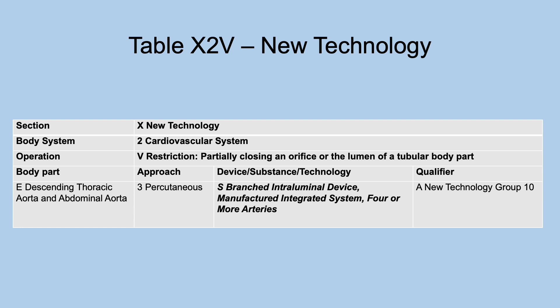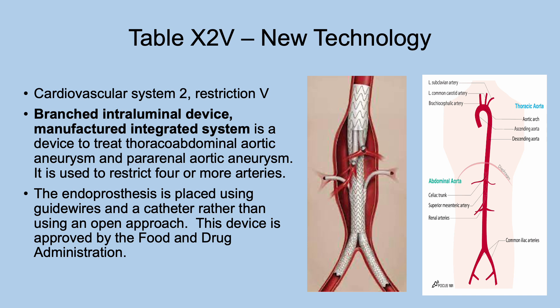Now let's look at new technology restriction in the cardiovascular system — for the descending thoracic aorta and the abdominal aorta. The new device is a branched intraluminal device, manufactured integrated system, four or more arteries. This treats thoracoabdominal aortic aneurysms and pararenal aortic aneurysms, restricting four or more arteries. It's an endoprosthetic prosthesis placed using guide wires and a catheter rather than an open approach, and this has been approved. The images show the abdominal and pararenal aorta where these are placed.